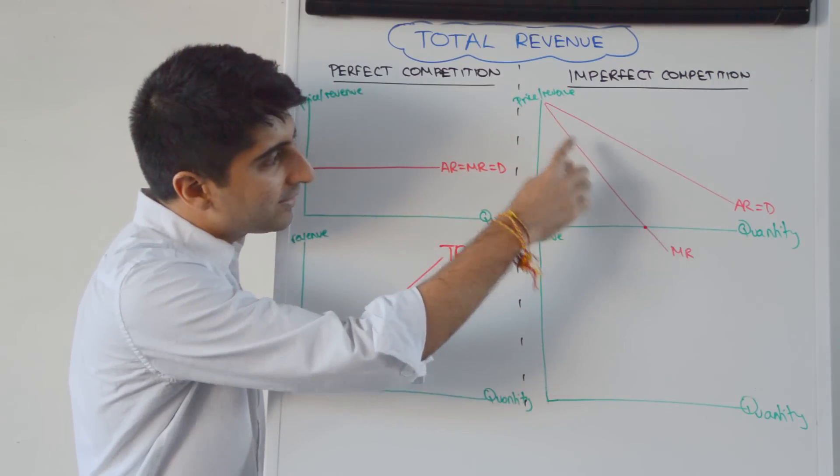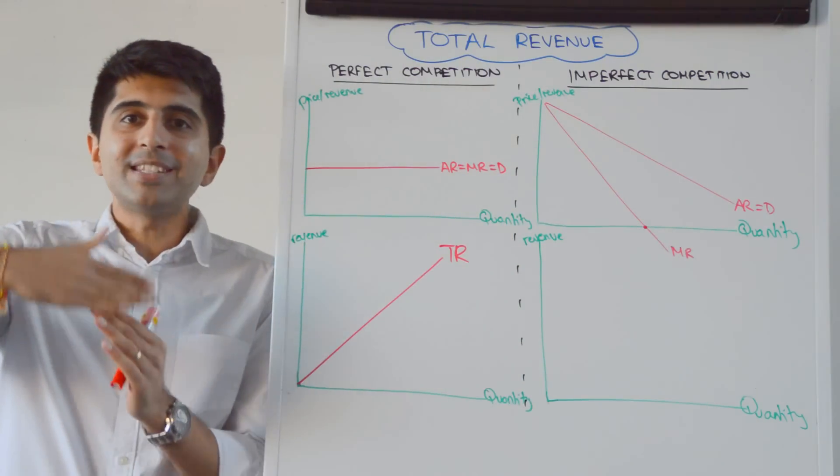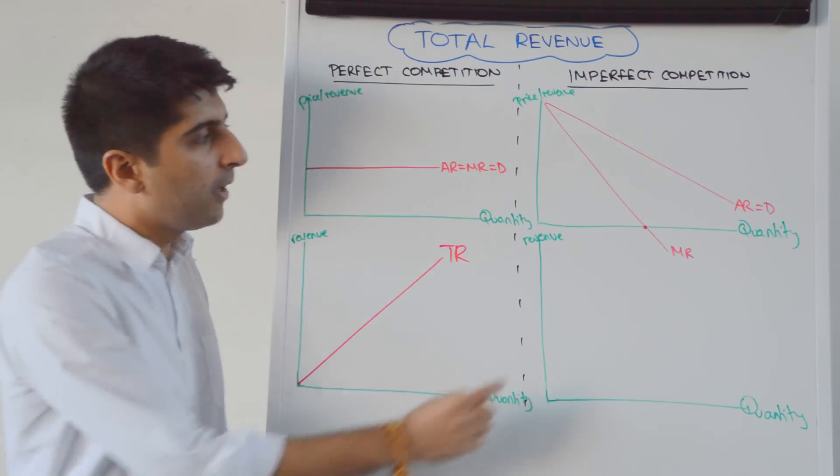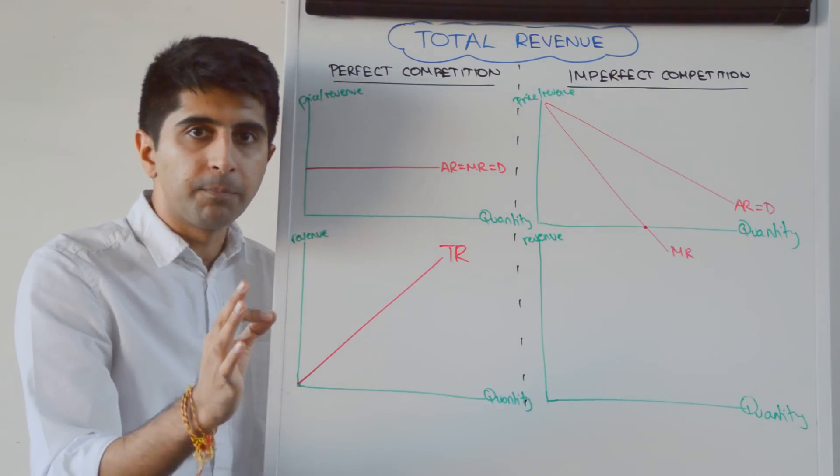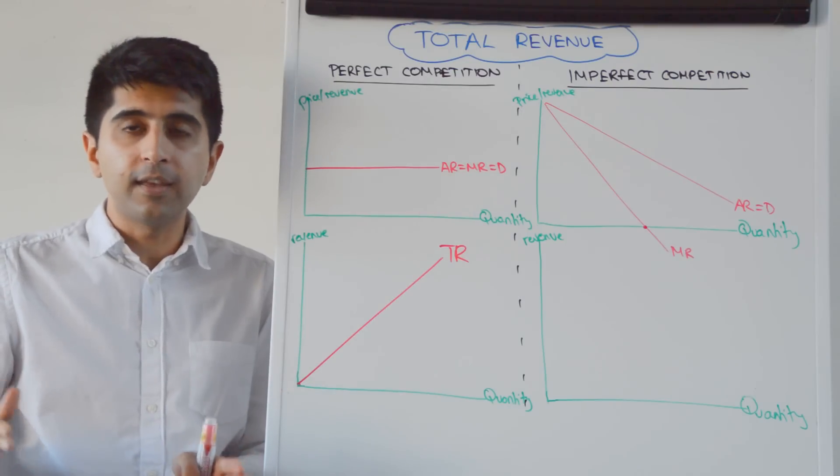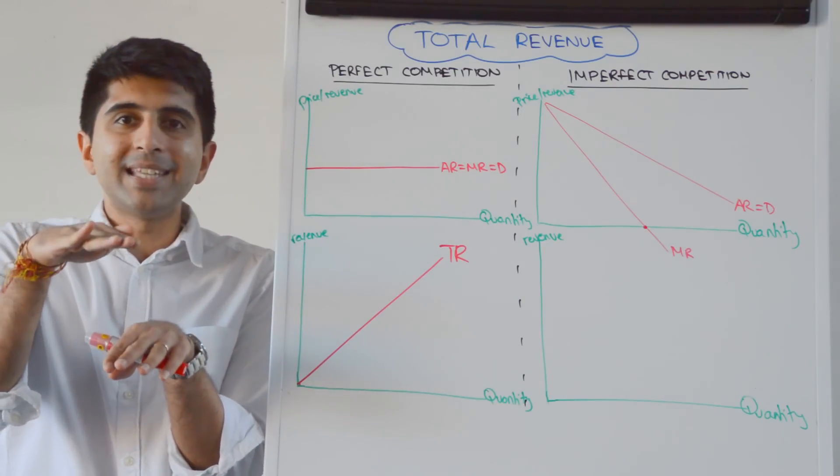But because MR is decreasing, the rate at which TR is increasing will be slower and slower and slower each time, up until MR is zero. Where MR is zero, there is no extra revenue to be generated at all by selling more units, which means total revenue will be hitting its peak.